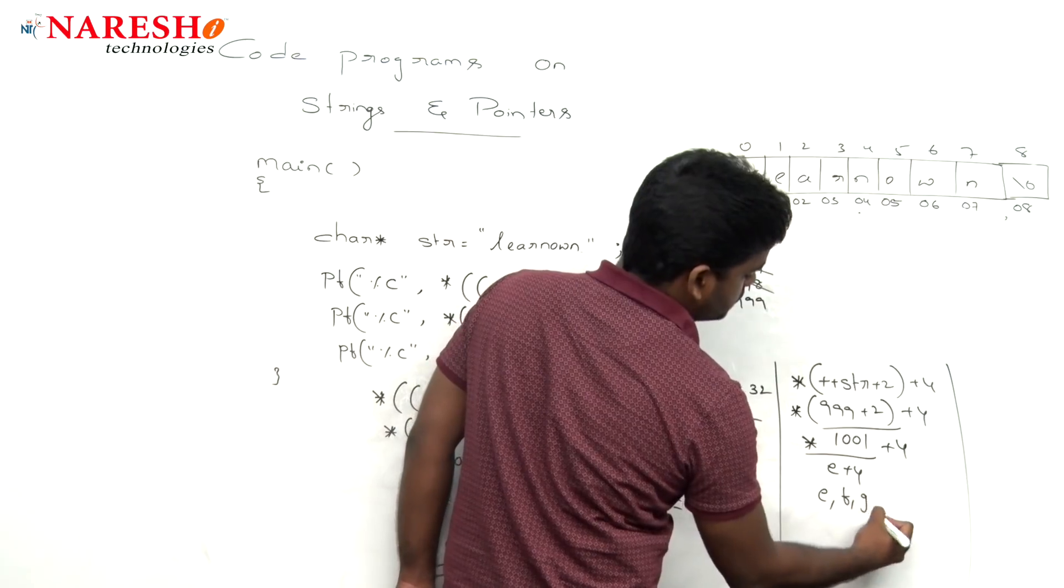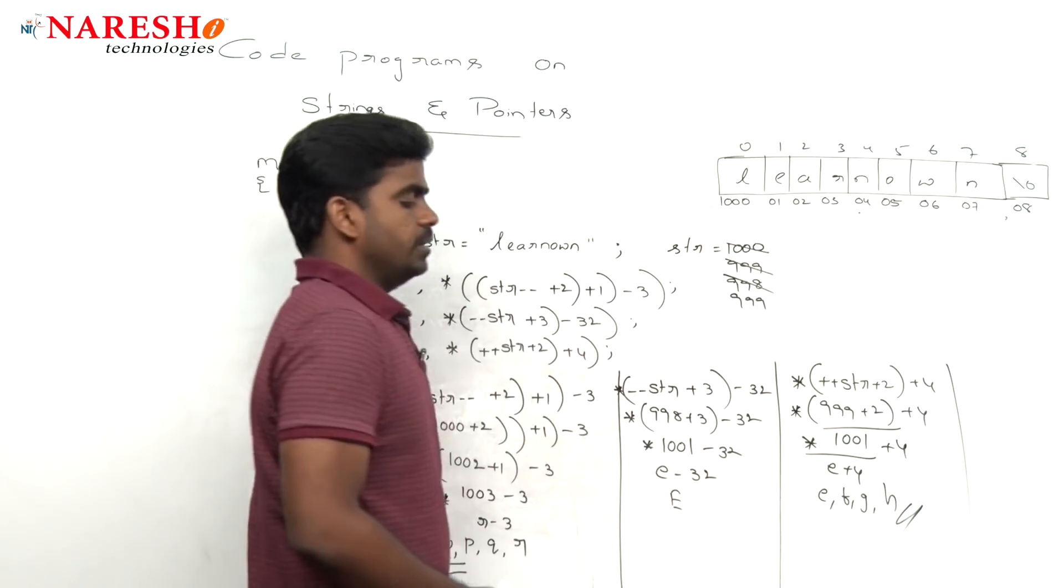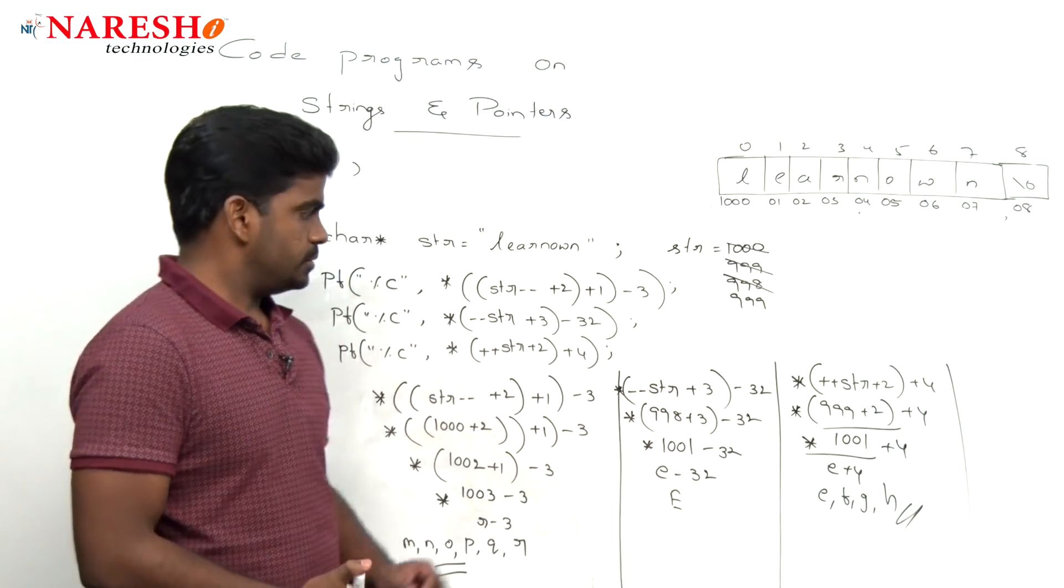See here it is a pointer to 1001 is what? It is small e plus 4. E, F, G, H. Here it is a small h is the output.